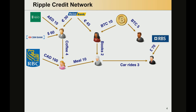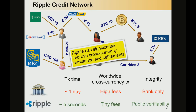Users can owe each other coffee, meals, books, or you name it. Such a Ripple credit network allows for the first time cross-currency transactions — every two users can perform a transaction even though they don't hold credit in the same denomination. This makes Ripple an interesting alternative to improve cross-currency remittance and settlements in the world.